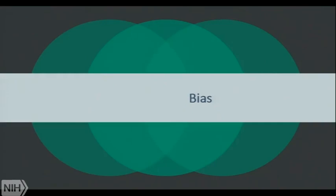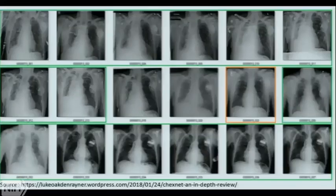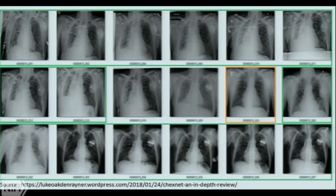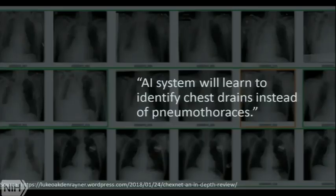Before we get too carried away, I want to talk about bias, because I think this is really critical. There's both AI system bias and human bias. On AI system bias: a blog post by Australian radiologist Luke Oakden-Rayner was very critical of the NIH dataset. He noted the labels weren't very useful — he showed examples of positive pneumothorax cases that had chest tubes circled. The concern is that you're training a classifier to learn where a chest tube is, not what a pneumothorax actually is.